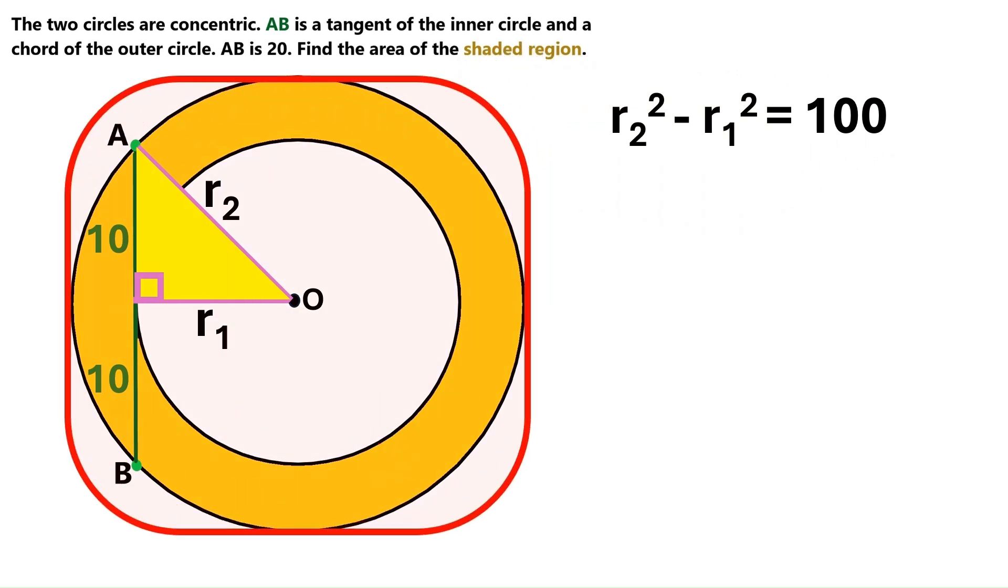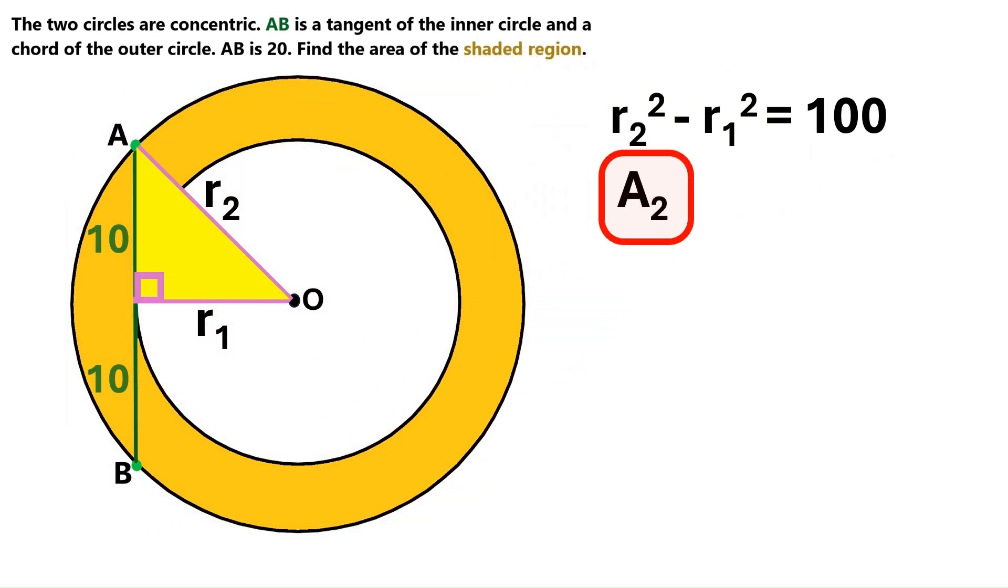Let's name the area of this outer circle A2. The radius of the outer circle is R2. So we can express the area as Pi times R2 squared. And let's name the area of this inner circle A1. The radius of the inner circle is R1. So we can express the area as Pi times R1 squared.